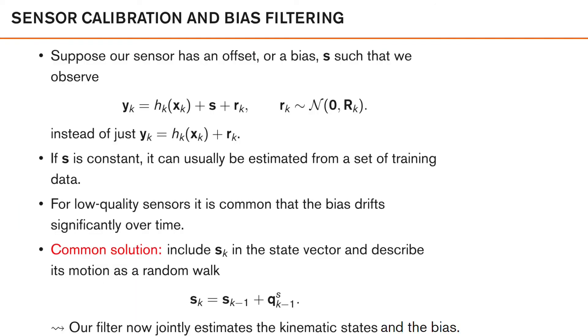So, another important aspect of sensor models is that many sensors have an unknown calibration parameter that needs to be set in order for the sensor to work properly. This could, for example, be the unknown tire circumference in the wheel speed example, or the bias in the gyroscope. So, in many cases, we need to calibrate our sensors, and this can also be viewed as an estimation or a filtering problem. Now, suppose our sensor has an offset or bias, s, such that we observe hk plus s plus r, instead of just hk plus r, which is what we expect to get.